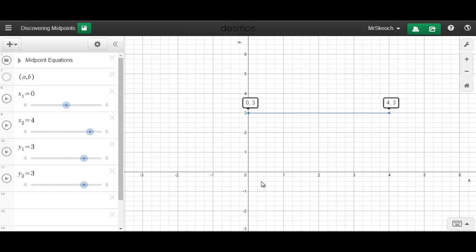I've started us off here with a line segment that has endpoints of (0,3) and (4,3). Let's see if we can come up with where the middle of this line segment is just by using our observation. It looks as though the midpoint should be somewhere obviously in the middle of these two points, but is there a way that we could calculate exactly where?